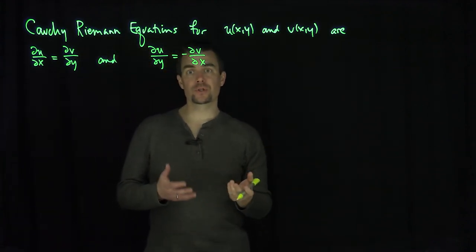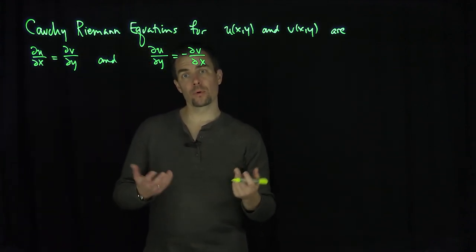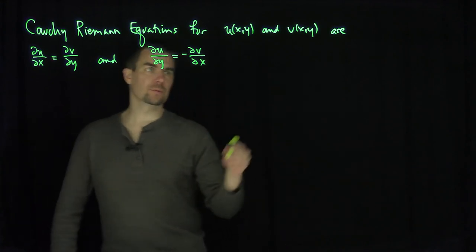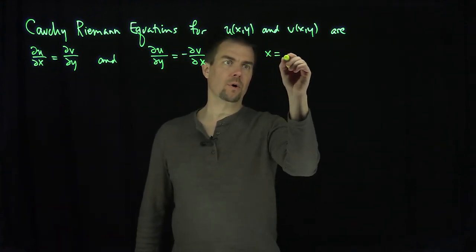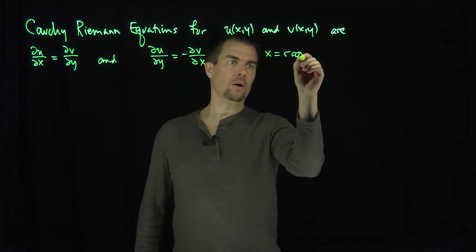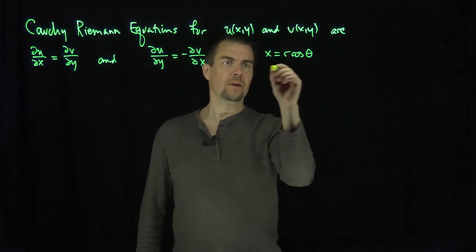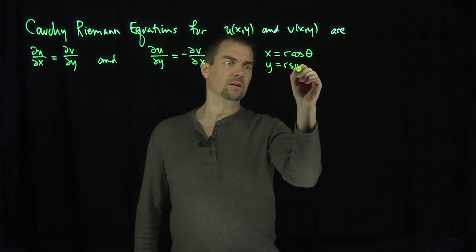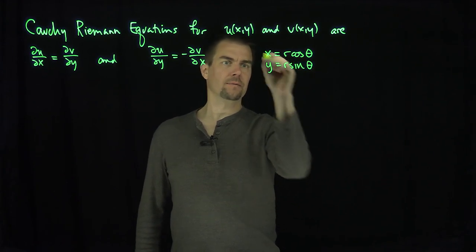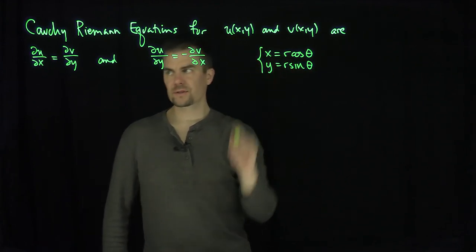So what we'll do now is figure out what these equations become in polar coordinates. Polar coordinates are just x equals r cosine theta and y equals r sine theta.